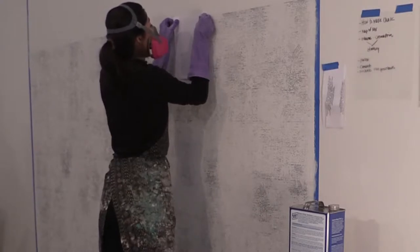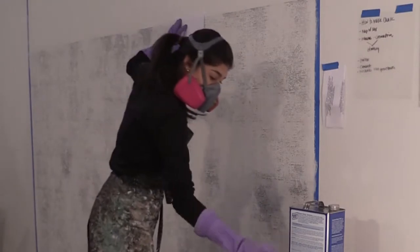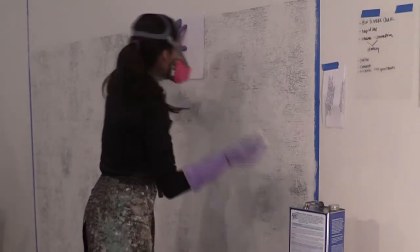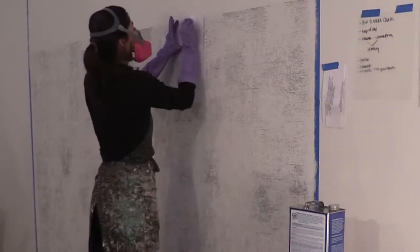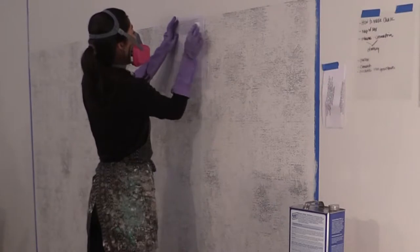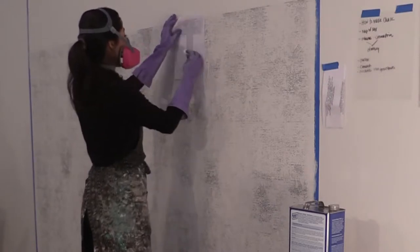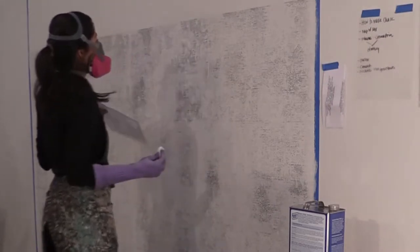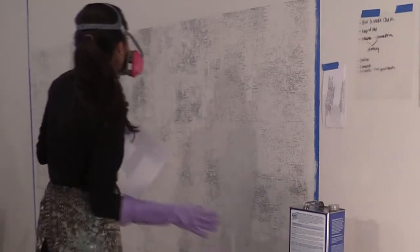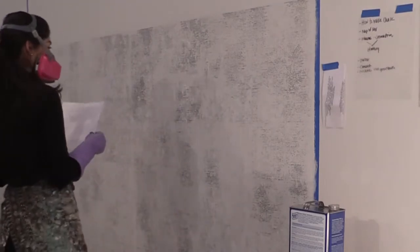Then I take a cotton ball, dip it into acetone, and rub it from behind. Once that has been applied and you take it off, the ink transfers onto the surface.